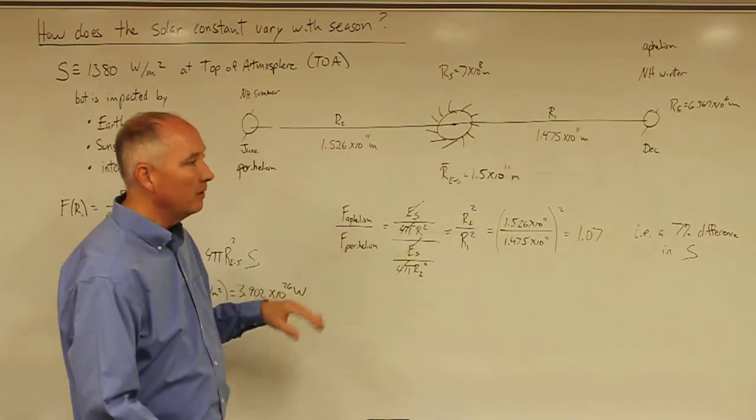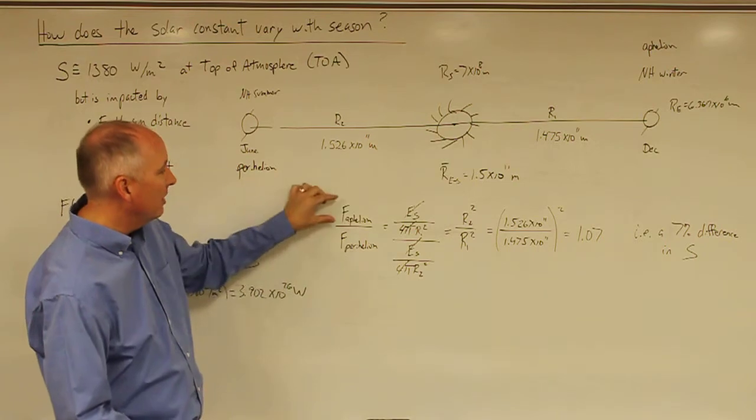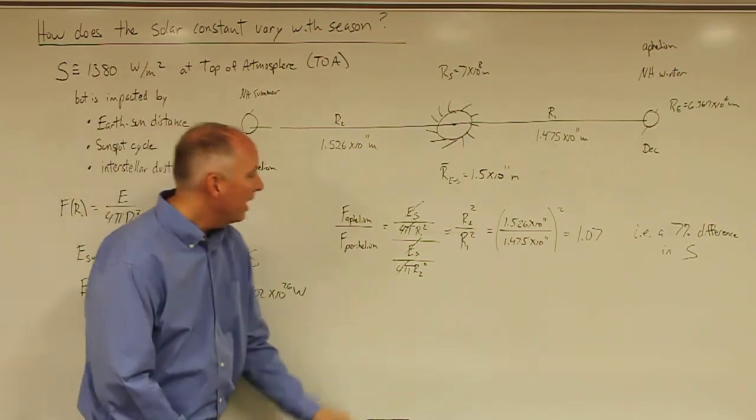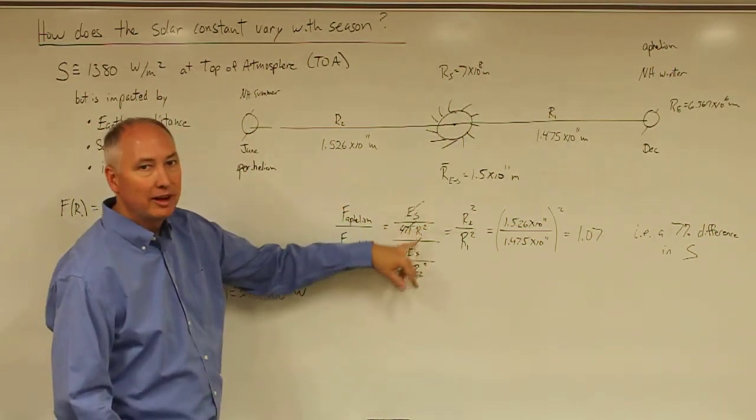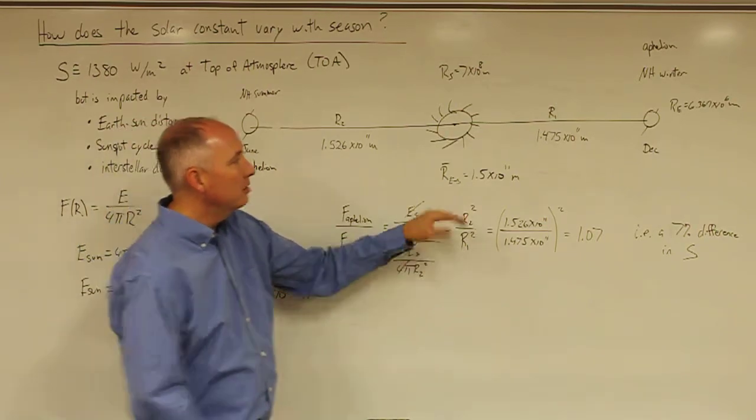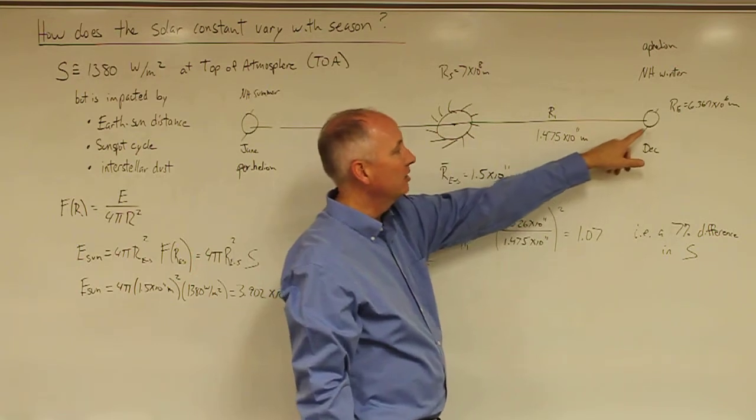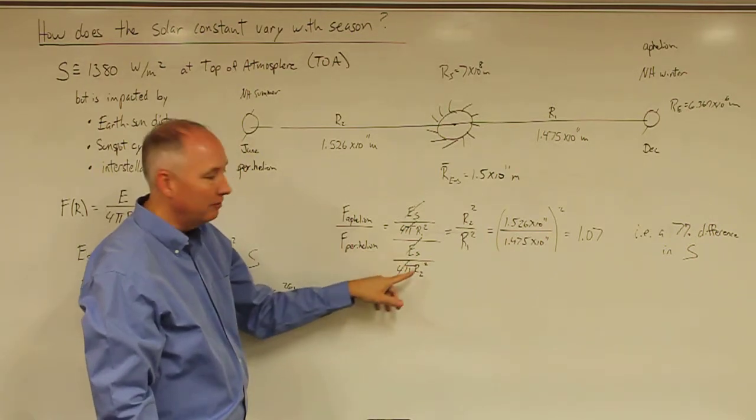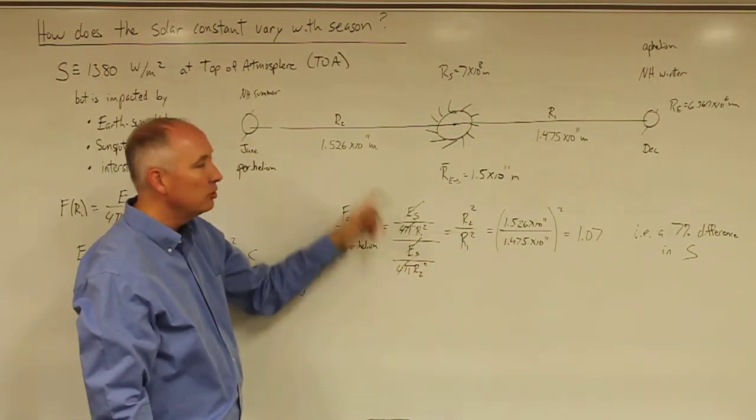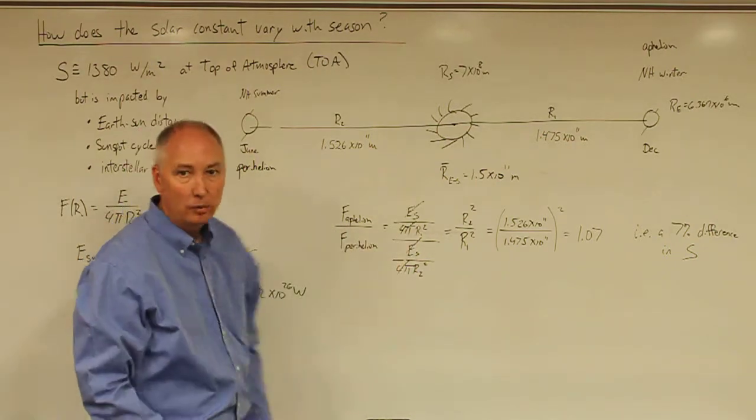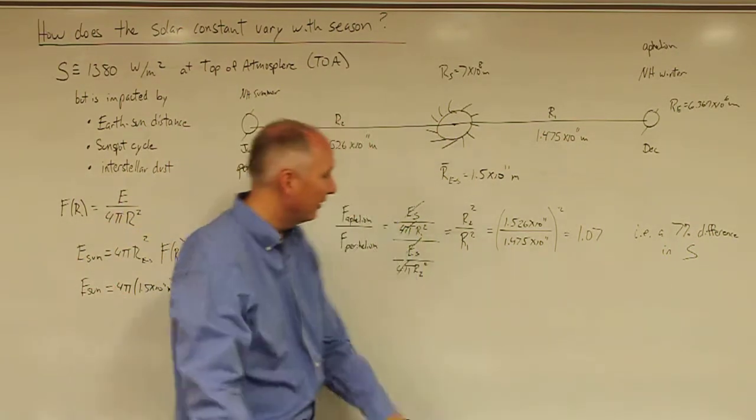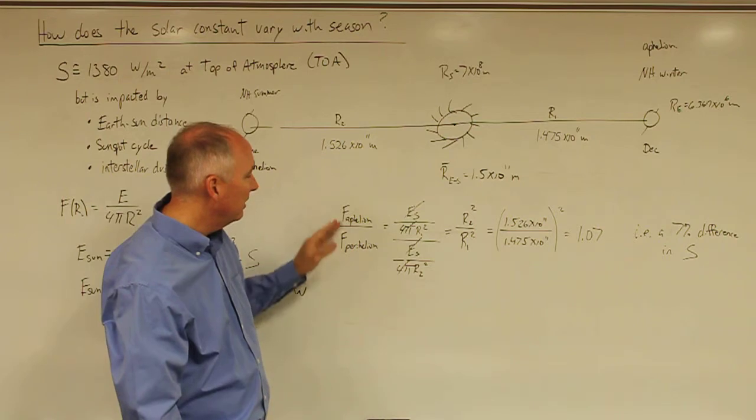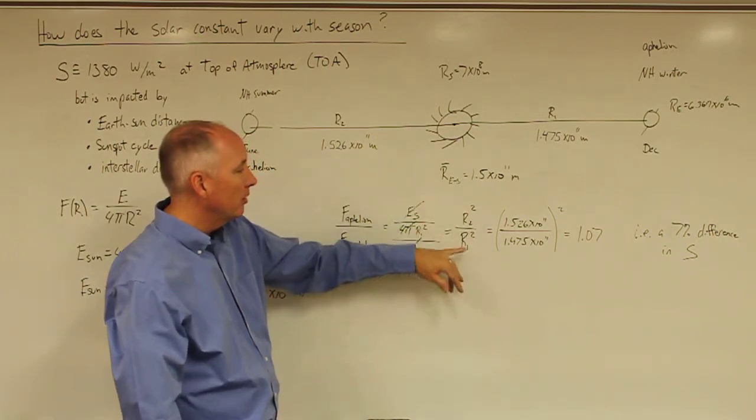But what we really want to know is how that irradiance at the top of the Earth's atmosphere is different between aphelion and perihelion. If we use that equation, we have the flux of the Sun divided by 4 pi r1, which is the radius of the sphere that goes through the Earth when the Earth is at aphelion, divided by the flux of the Sun divided by 4 pi r2 squared. So the flux of the Sun cancels out. We didn't actually have to do this calculation, but it was instructive nonetheless. The 4 pi's cancel, and you'll end up with the ratio of the irradiance at aphelion to perihelion is equal to r2 squared over r1 squared.